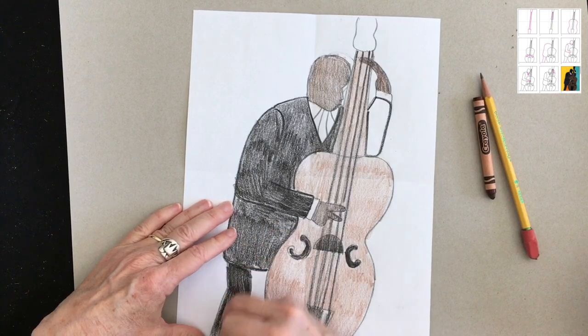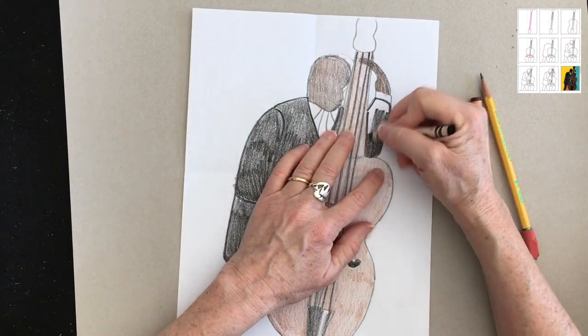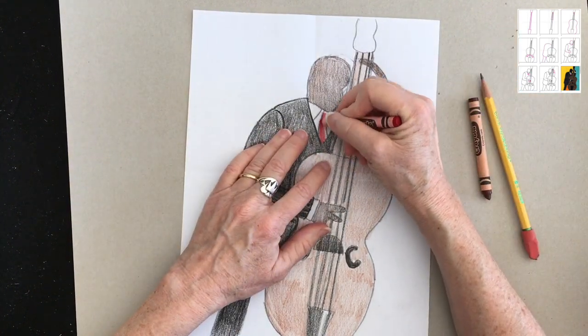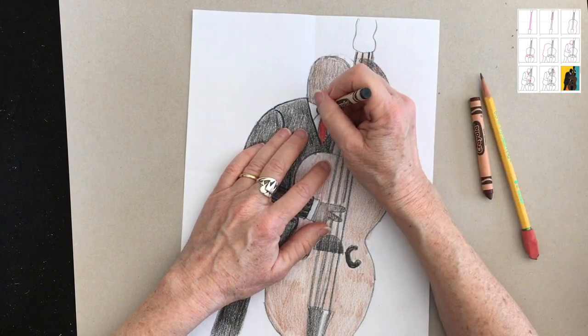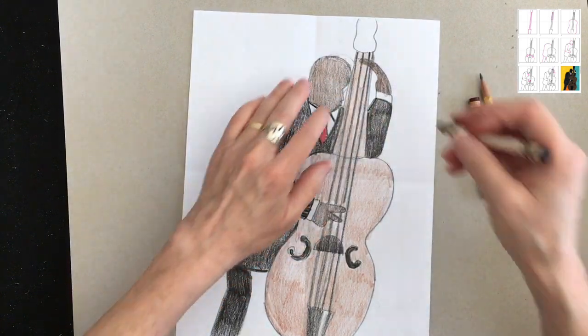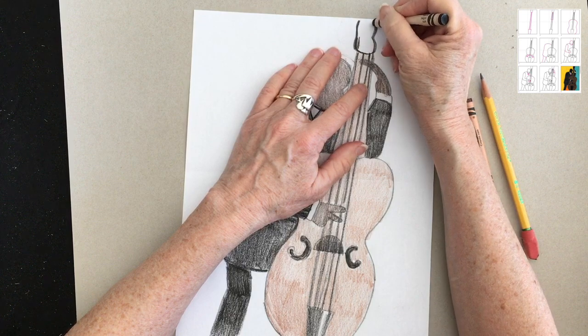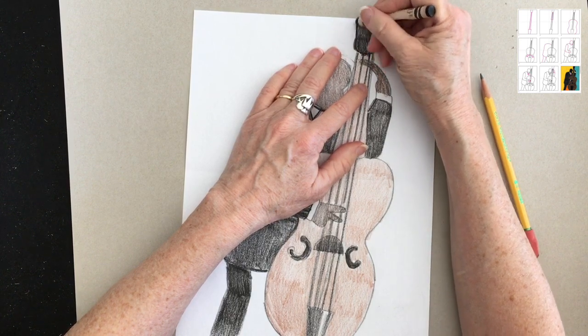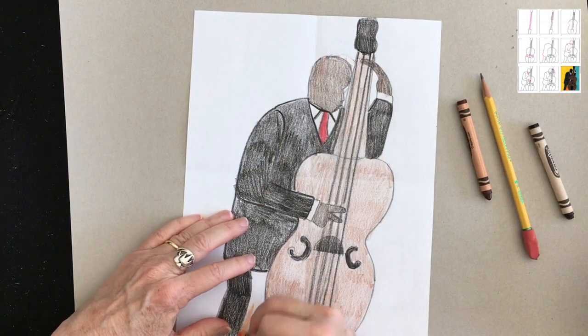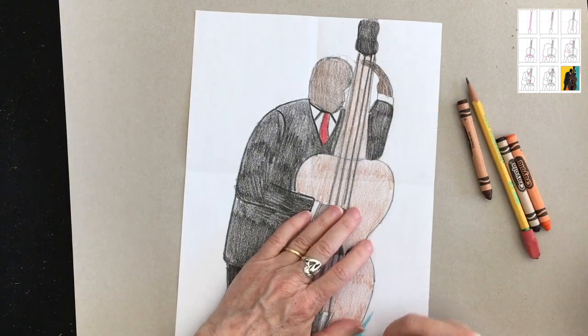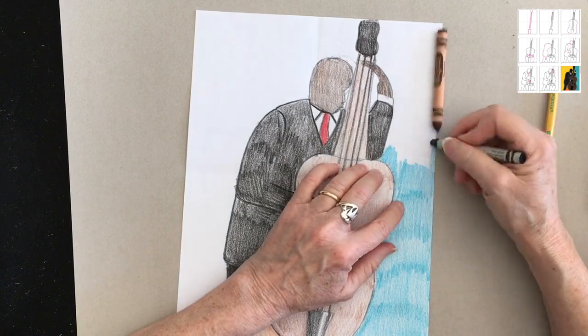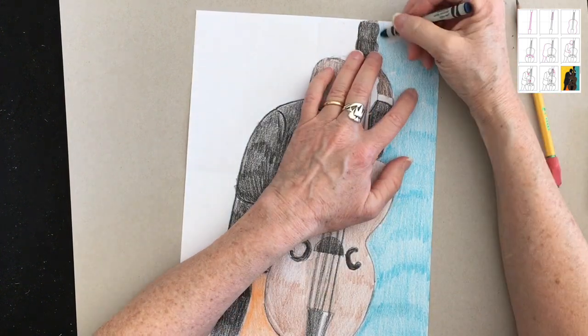Because Romare Bearden usually did collages, he would have big areas of just plain color that were made from other papers. Here goes the necktie. I want to make sure the color of the shirt shows. Oops, and I forgot the very top of the bass. You can do whatever you'd like for a background. I'm going to copy what the designer of the drawing did just to show you how great it is when the whole background is filled with color.